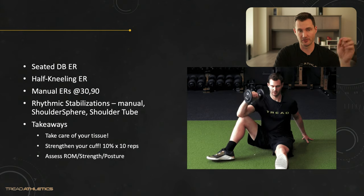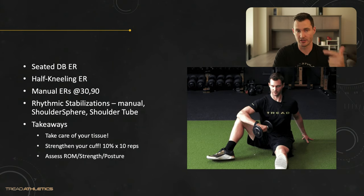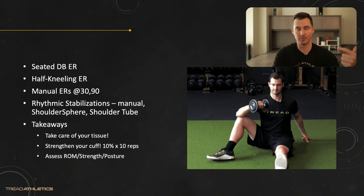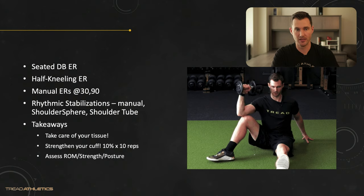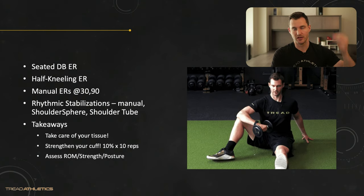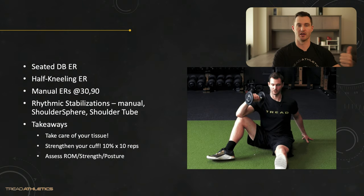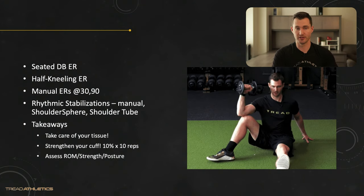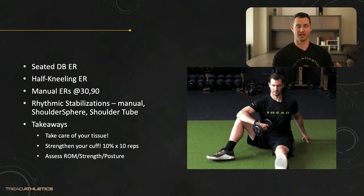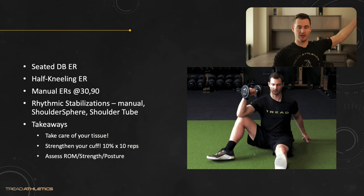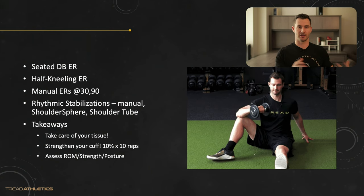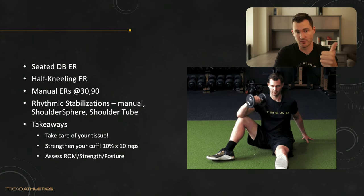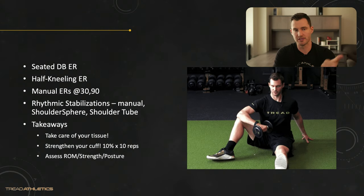Half-kneeling external rotations are another good one. If you have a coach or athletic trainer who can do manual resistance, these are amazing for the posterior cuff because they can perfectly match the strength curve and give you the ideal amount of resistance through the entire movement. Some sort of cuff timing movement — shoulder tubes, body blades, the Shoulder Sphere — or a partner moving your arm around in various positions to work on timing and co-contraction of all the muscles surrounding the scapula and shoulder.